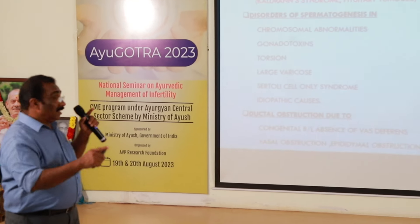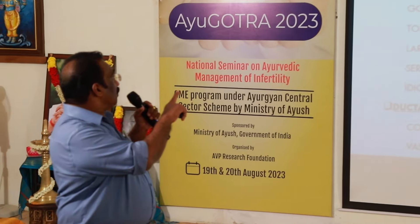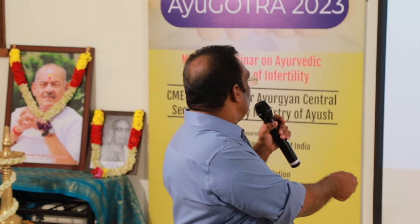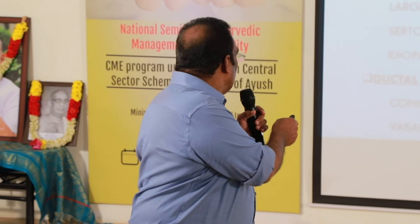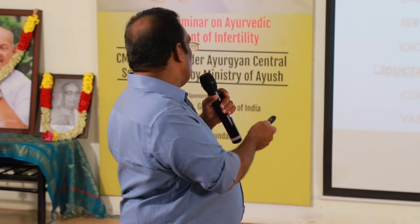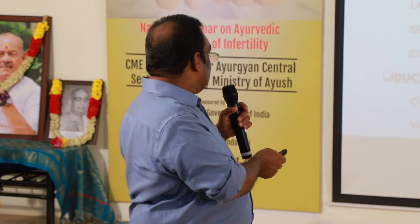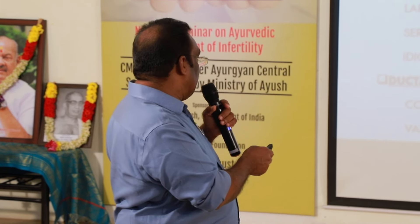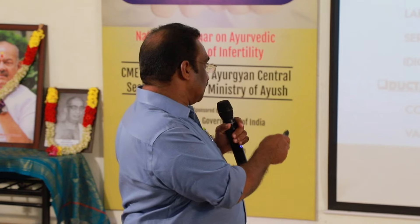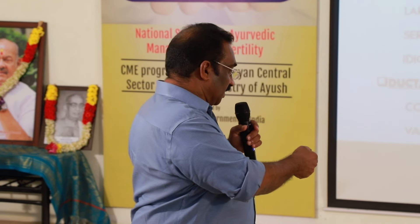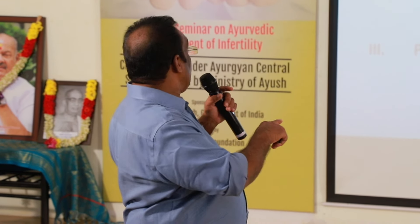Azoospermia causes may include hypogonadotropic hypogonadism — examples being Kallmann syndrome and pituitary tumors. Also, disorders of spermatogenesis due to chromosomal abnormality, gonadotoxins, torsion, large varicocele, scrotal causes, Sertoli cell-only syndrome, and idiopathic causes. Ductal obstruction due to congenital bilateral absence of vas deferens, vasal obstruction, epididymal obstruction, or ejaculatory obstruction are also causes.